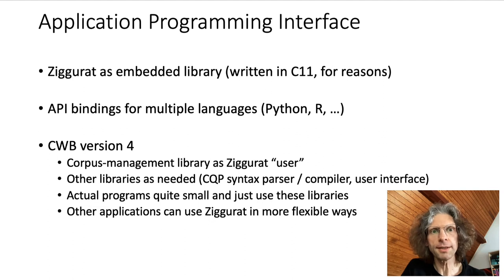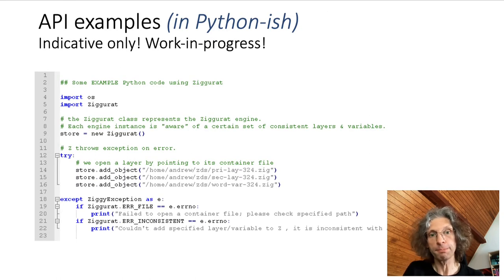We see Ziggurat mainly as an embedded library that provides flexible corpus indexing services for many different applications. For this reason, there will be API bindings for many high-level languages including Python and R. Our implementation of CWB version 4 and in particular the new CQP query processor will be one set of users of this generic library. Here's a mock-up of what the Python API to Ziggurat might look like.